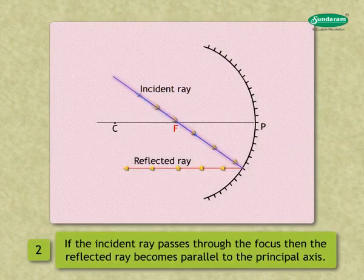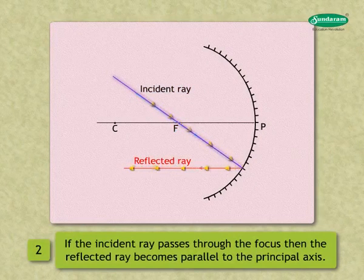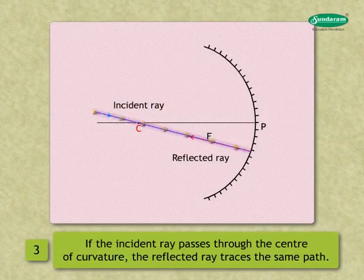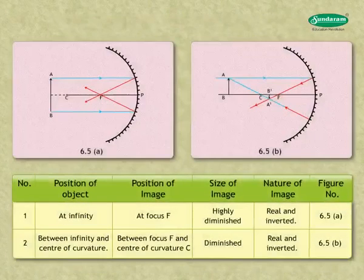Rule three: If the incident ray passes through the center of curvature, the reflected ray traces the same path. The ray diagrams for the formation of image by a concave mirror for various positions of the object are illustrated here.